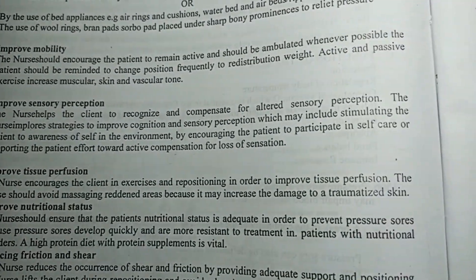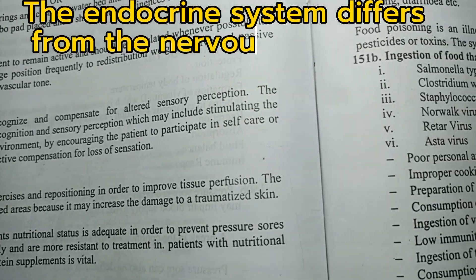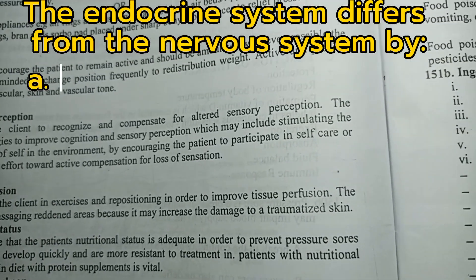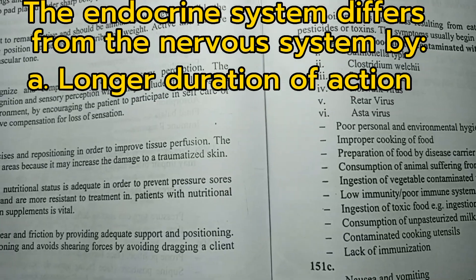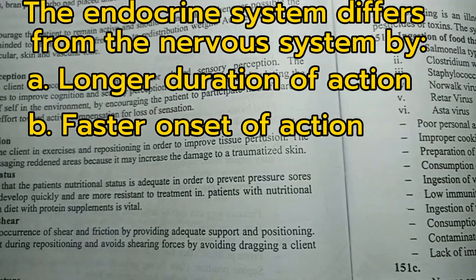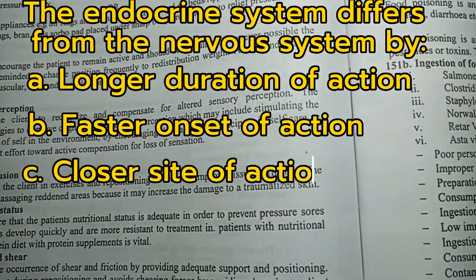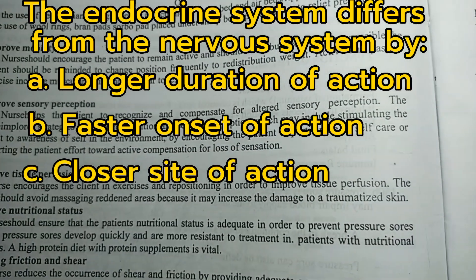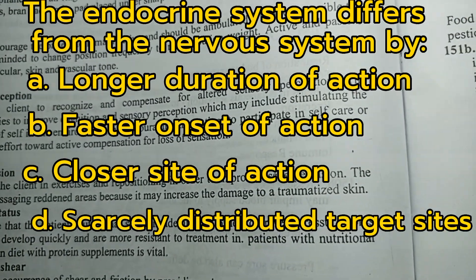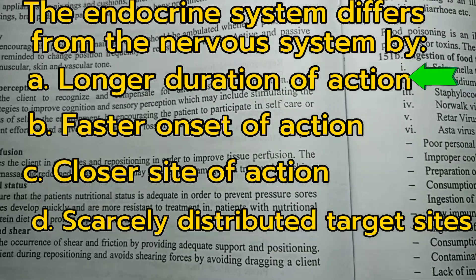Number 13. The endocrine system differs from the nervous system by: A. Longer duration of action, B. Faster onset of action, C. Closer site of action, D. Scarcely distributed target sites. Answer: A. Longer duration of action.